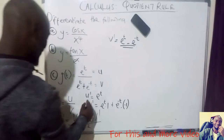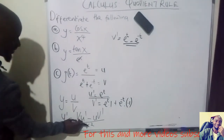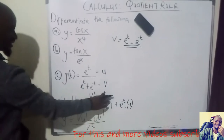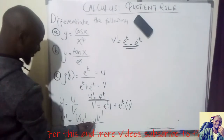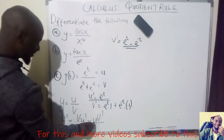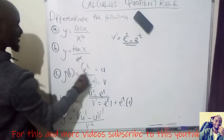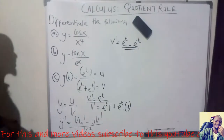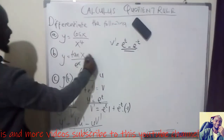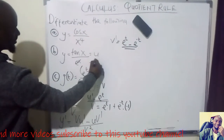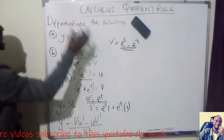Now substitute into the quotient rule formula: wherever there is U prime, you put eᵗ; wherever there is V prime, you put eᵗ minus e^(−t); and U and V are what you were given. It is very easy to differentiate a quotient — just name your numerator U and the denominator V, then follow the quotient rule.